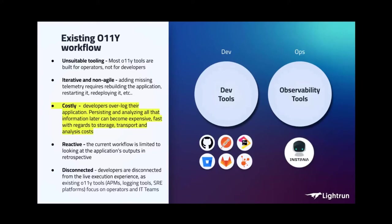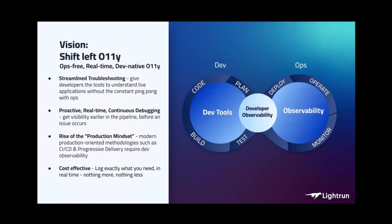There are a bunch of problems with the current observability process. Observability tooling is generally built for operators — people who operate production systems — not for developers who write the code. Adding more telemetry, writing more logs, instrumenting more metrics, and doing more things is usually a very non-agile process: you have a problem, you add telemetry, you redeploy, you figure out the next step, you add more telemetry, you redeploy, and so on.